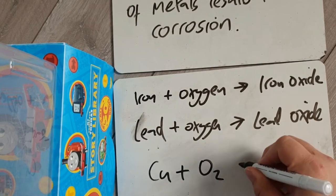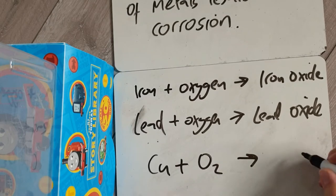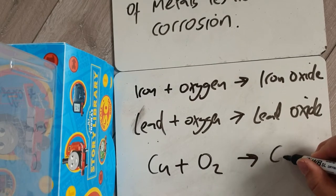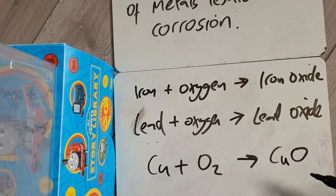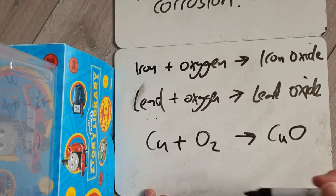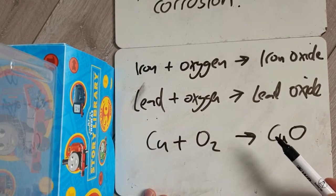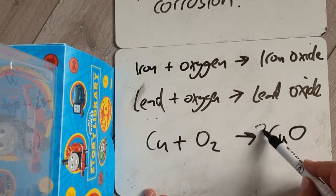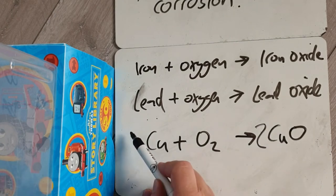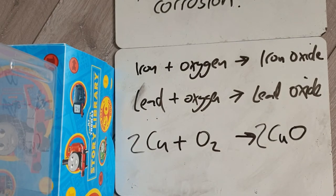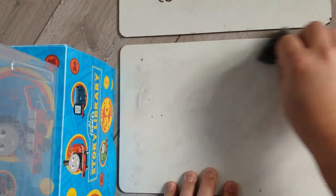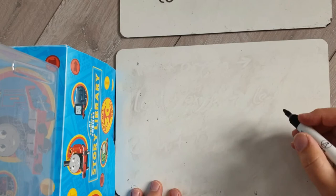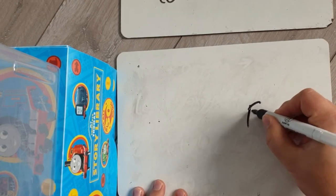You don't need to know all of these oxides, but you do need to be able to balance the equation if they give it to you. If copper oxide is CuO, you've got two oxygens on one side, so you need a coefficient of 2 there, and then you need 2 coppers on the other side.